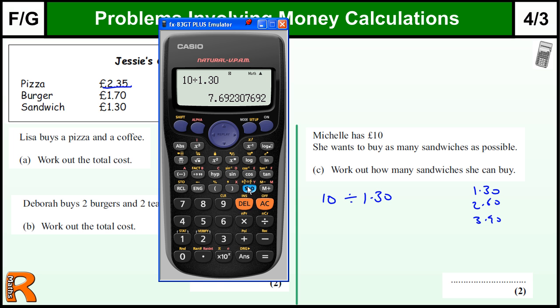Gives us 7.69, so she can buy seven sandwiches - can't buy 7.69 of a sandwich. So it's between 7 and 8, but the most you can buy is 7 sandwiches. For two marks, if you've got that division written down but make a mess of this answer, you will get one mark for the method.